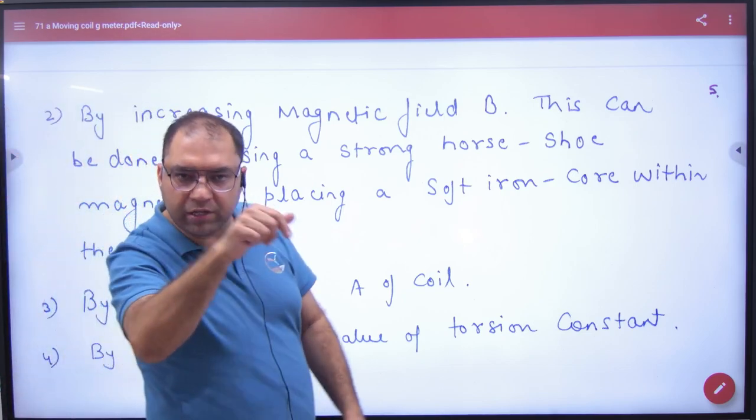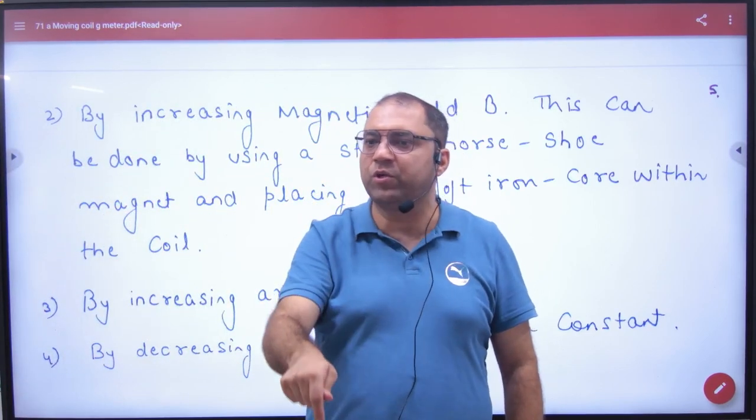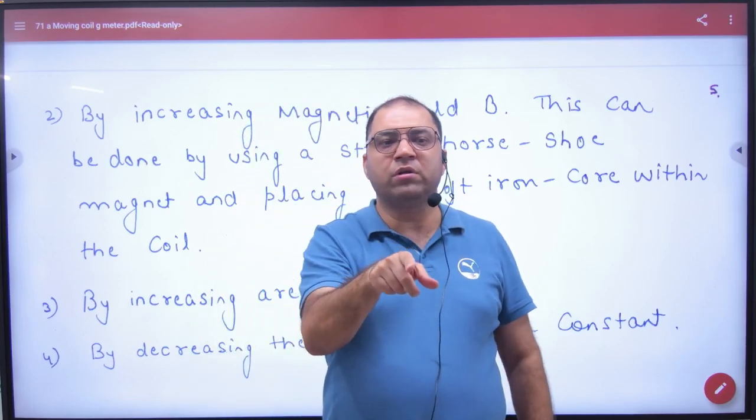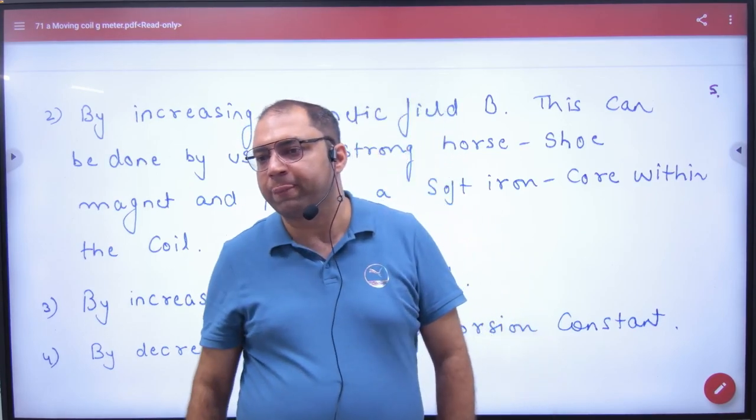Coil ke beech mein, humne lakkad use nahi ki, wood use nahi kiya, copper use nahi kiya, soft iron core use kiya. Soft iron core ferro magnetic material hai. Ferro ka matlab, highly magnetize.